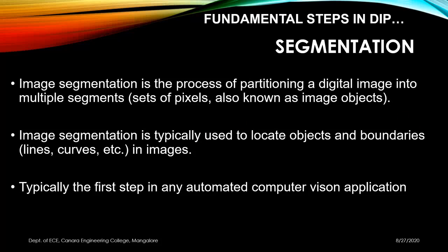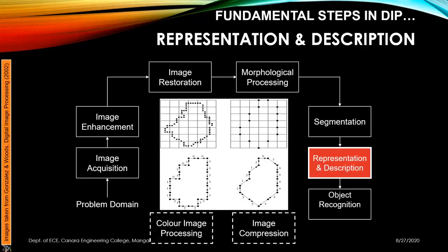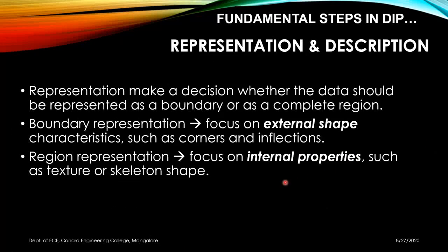The next block is representation and description. Here we create boundaries around objects and identify their shapes. We decide whether the data should be represented as a boundary or as a complete region. In boundary representation we focus on external shape characteristics such as corners and inflections, while in region representation we focus on internal properties such as textures or skeleton shape.